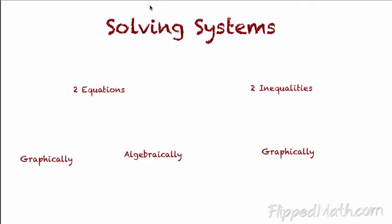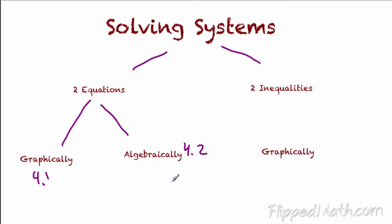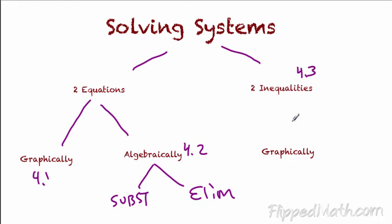Let's talk a little bit about what your test is going to look like. The whole solving systems unit can be broken down basically into two sections: you're either going to have two equations or two inequalities. If you have two equations, you can solve them graphically — that was section 4.1 — or you can solve them algebraically — that was section 4.2. Algebraically, we have substitution and elimination. Section 4.3 is when you have two inequalities, and you can only solve them graphically.